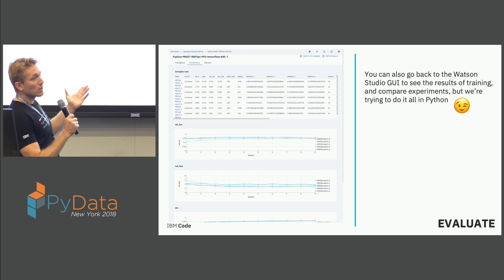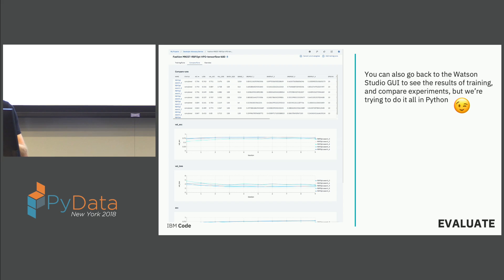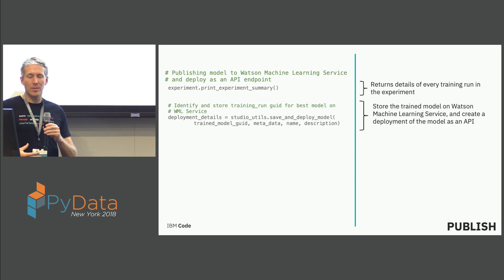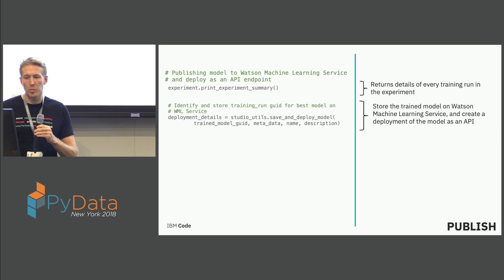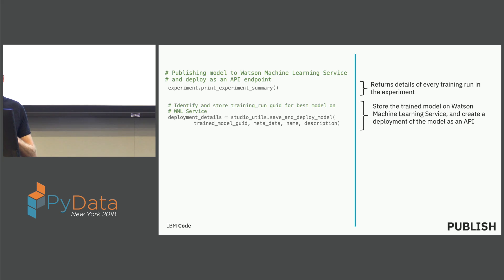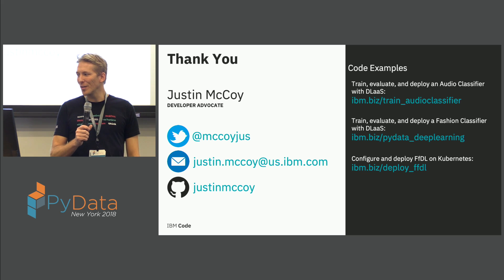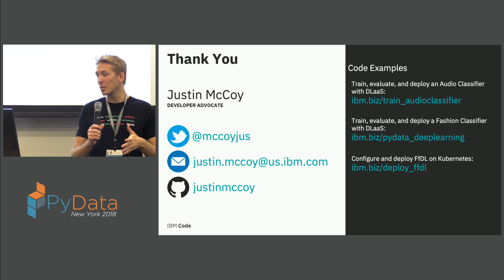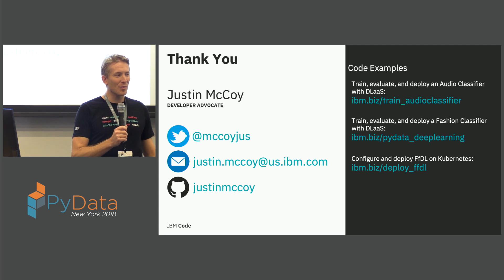Here's what it looks like in Watson Studio if you're not using code — the click-through interface. I've also simplified the deployment by abstracting out the many API calls needed to save and deploy models into Python helper functions. All the source code shown here is in a GitHub project — pydata_deep_learning.